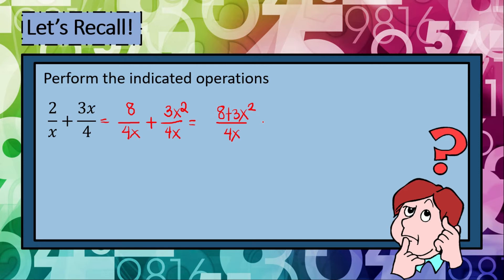Since we cannot simplify this anymore, this is now our answer. We can rewrite this into 3x squared plus 8 all over 4x.